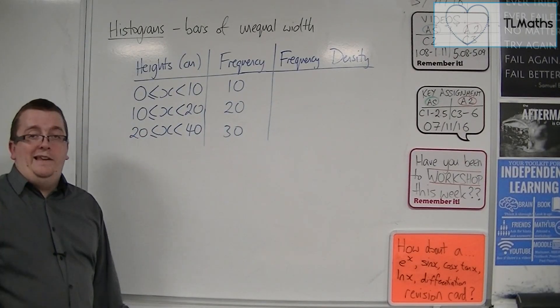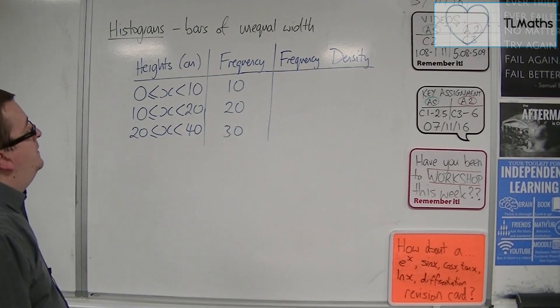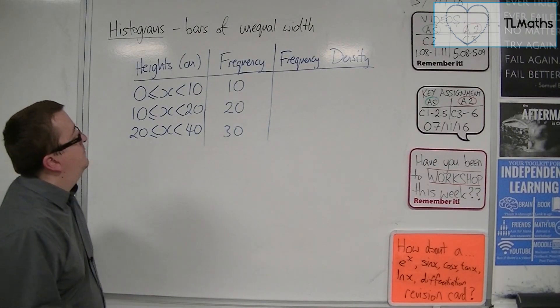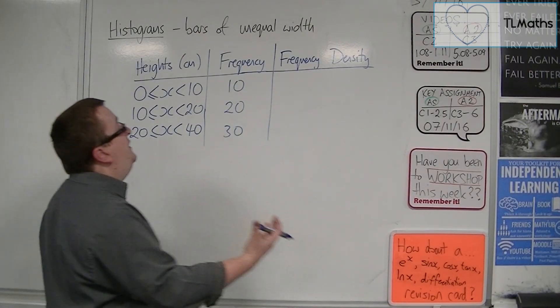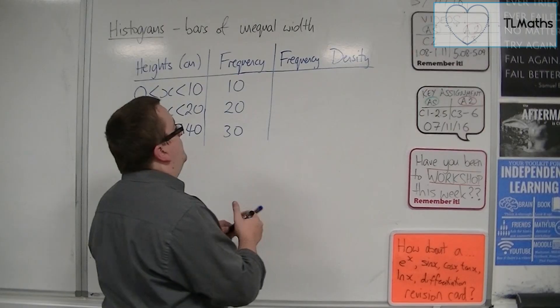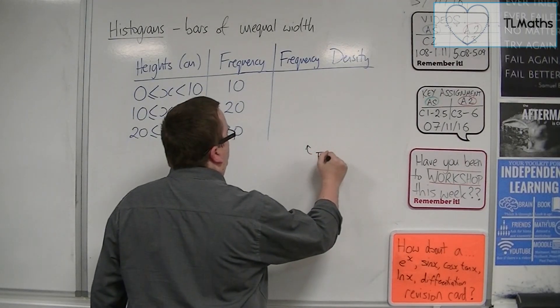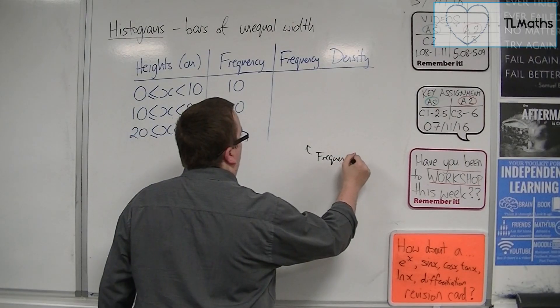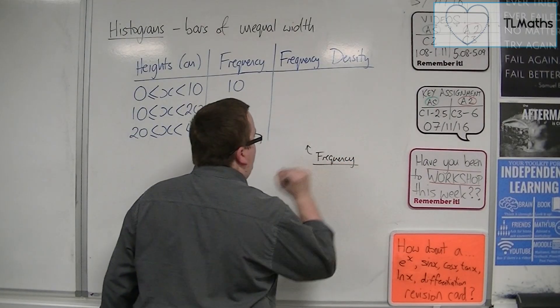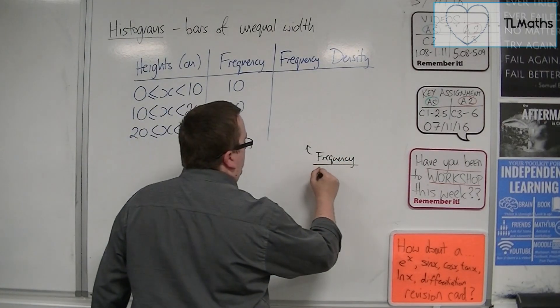Effectively, it's telling you how dense the frequency is. That's a literal translation of it. Now, how do you calculate it? Well, frequency density is calculated by finding the frequency and then dividing that by the width of the group.